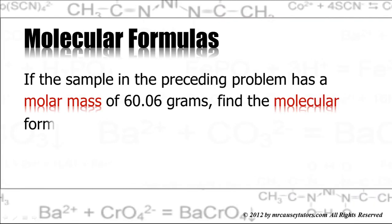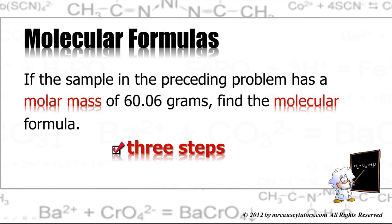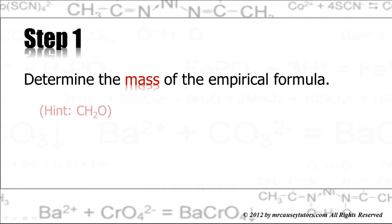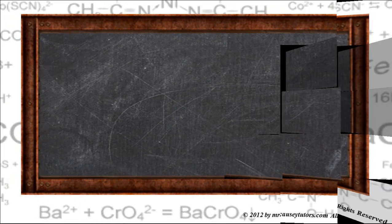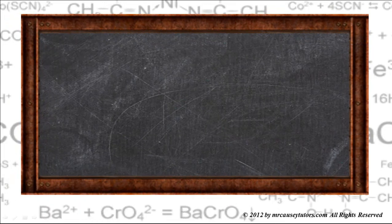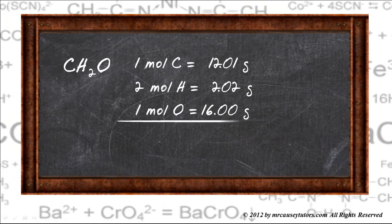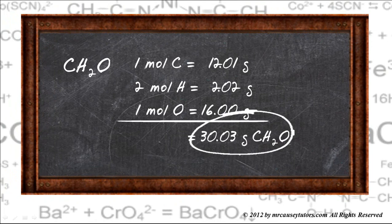If the sample in the preceding problem has a molar mass of 60.06 grams, find the molecular formula. We have three steps in this calculation. Step one, determine the mass of the empirical formula. The empirical formula, of course, being CH2O. To the blackboard, and we get CH2O, one mole of carbon, two moles of hydrogen, and one mole of oxygen. It all adds up to 30.03 grams of that compound, at least the empirical formula.